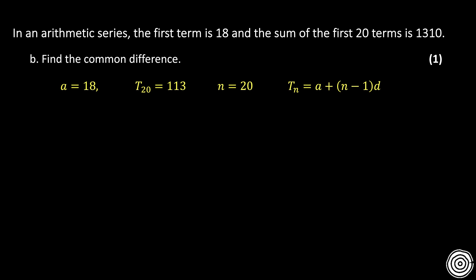And I'll be using that general formula for my arithmetic term. So putting in all that information, I know my 20th term, again, is 113. So I've got 113 is equal to 18 plus 19D.